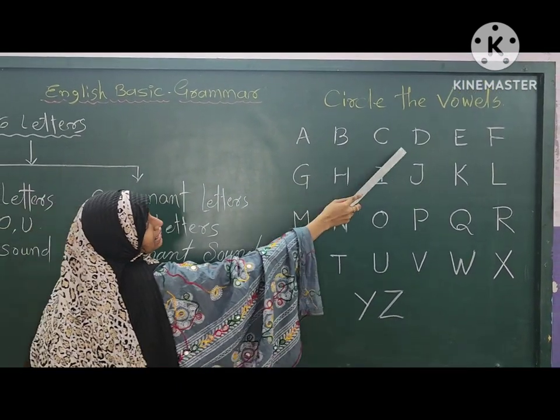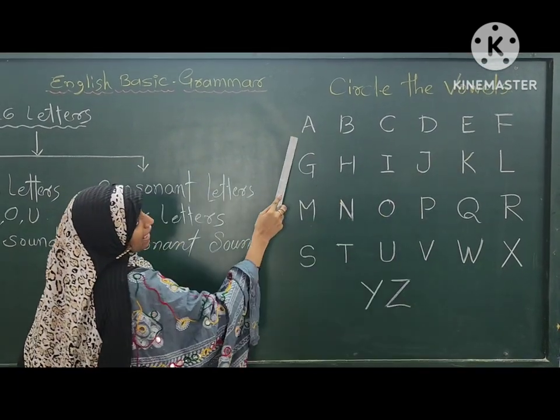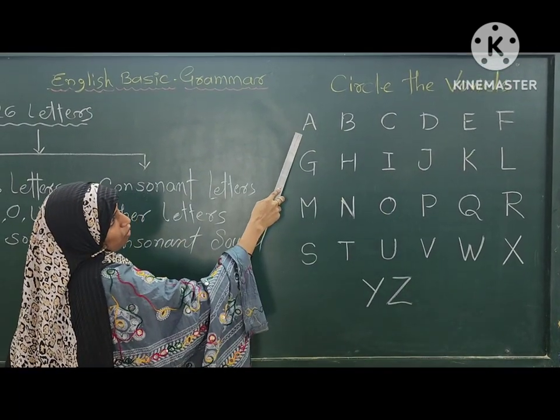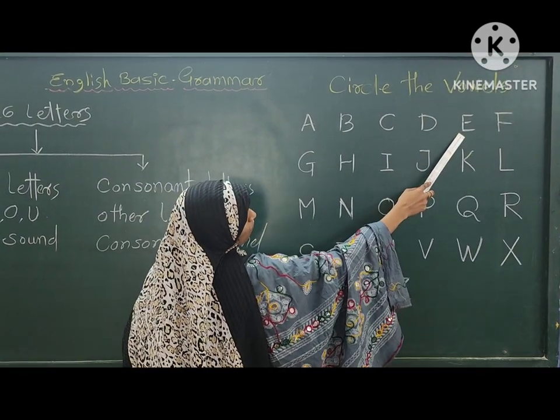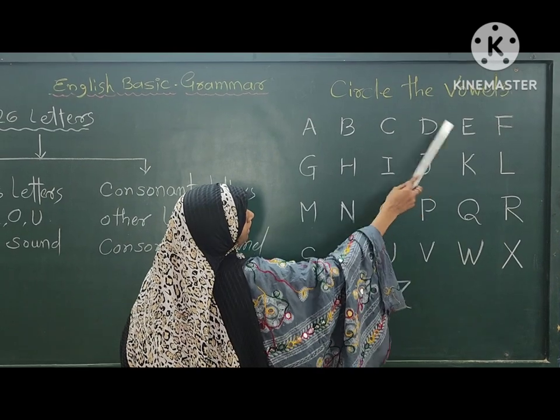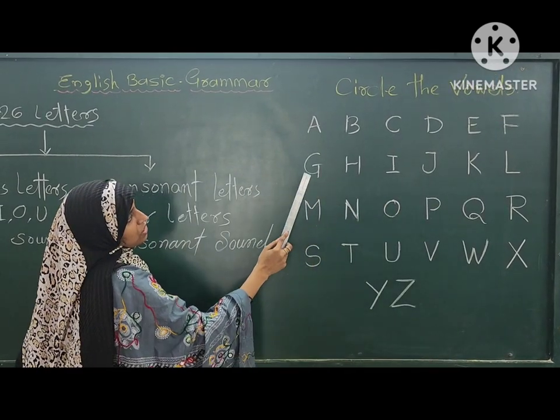Here, A is a vowel and E is a vowel. The rest of the alphabets in this group — B, C, D, F — are consonants.